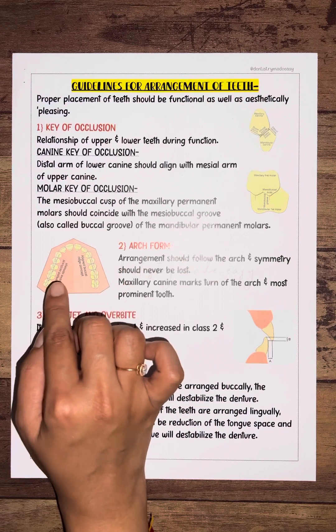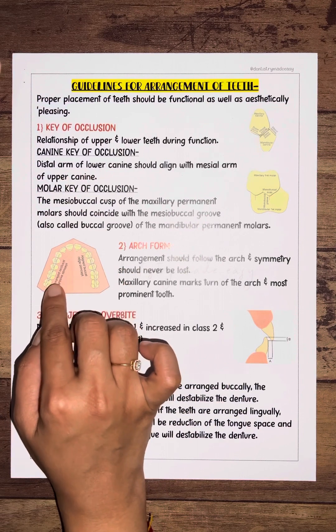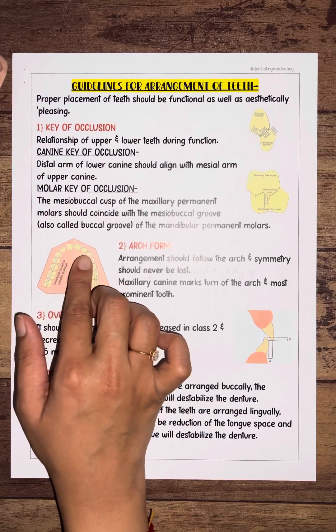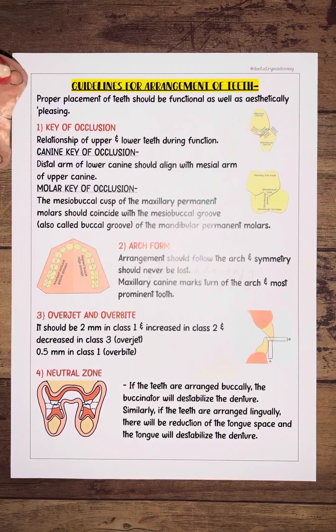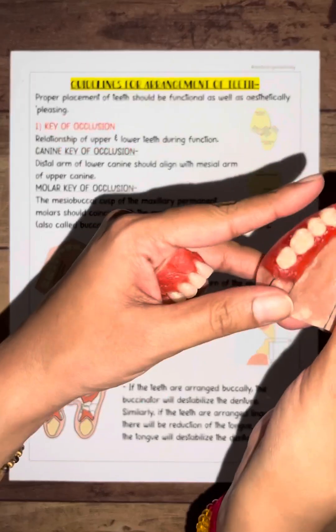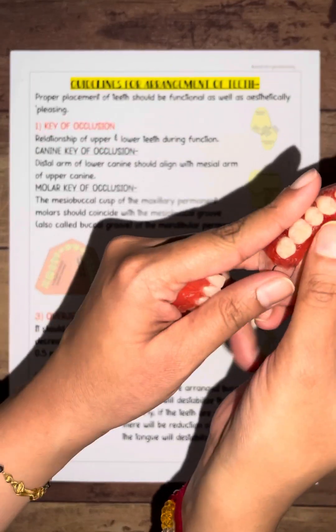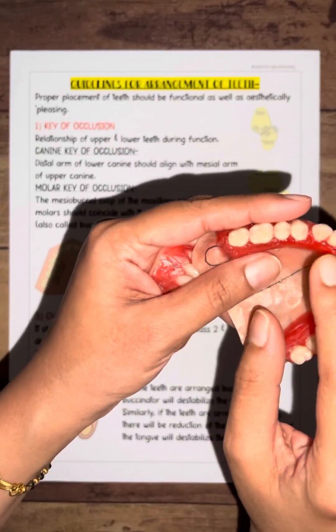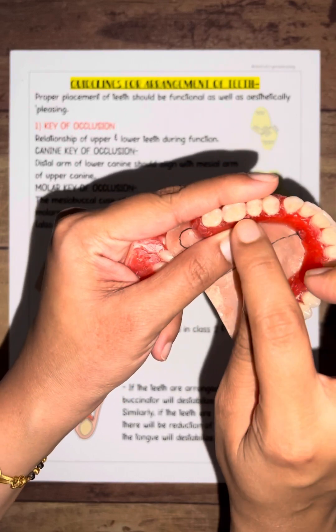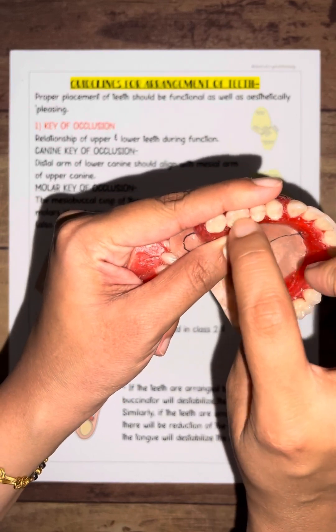The second guideline is about arch form. The arrangement of teeth should follow the arch, and symmetry should never be lost. When arranging the teeth, symmetry must be followed properly.